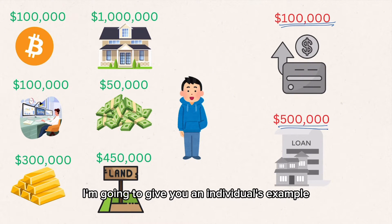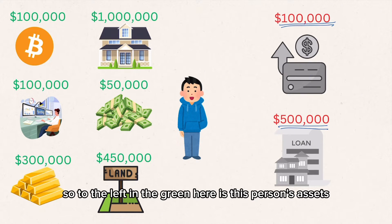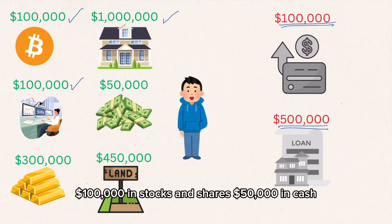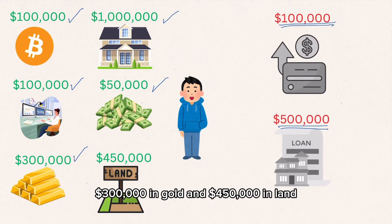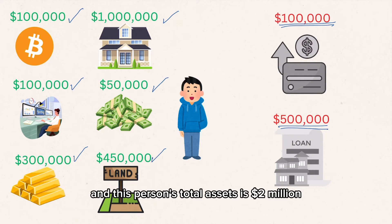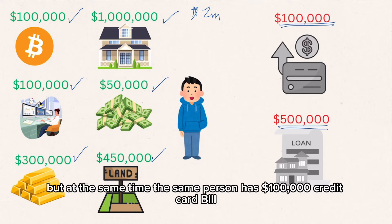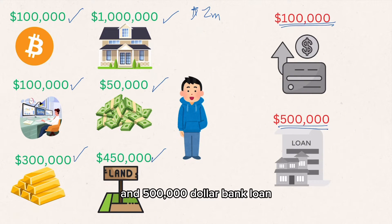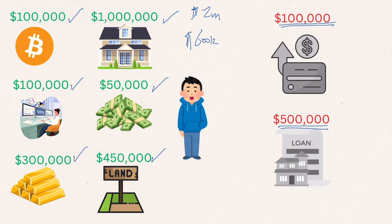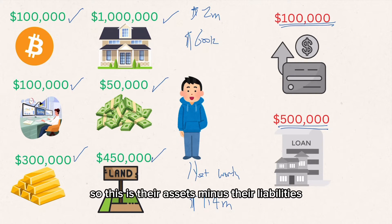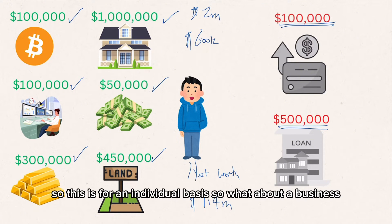I'm going to give you an individual's example of their assets and liabilities. To the left in green are this person's assets: a hundred thousand dollars in Bitcoin, a million dollars in property, a hundred thousand dollars in stocks and shares, fifty thousand dollars in cash, three hundred thousand dollars in gold, and four hundred and fifty thousand dollars in land — giving total assets of two million dollars. At the same time, the same person has a hundred thousand dollar credit card bill and a five hundred thousand dollar bank loan, totalling six hundred thousand dollars. So this person's net worth is one point four million dollars — assets minus liabilities.